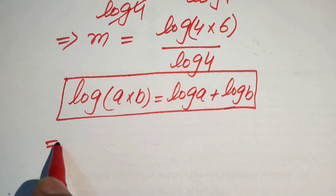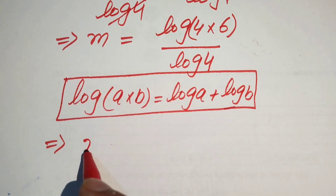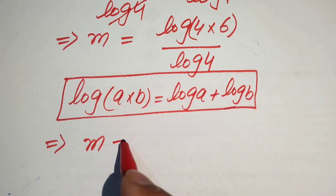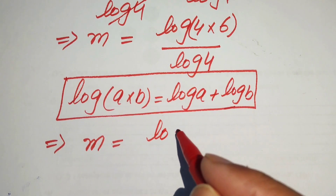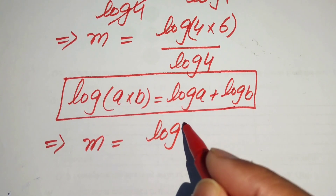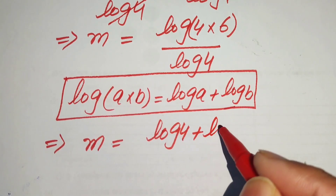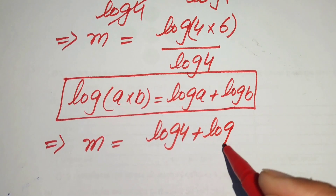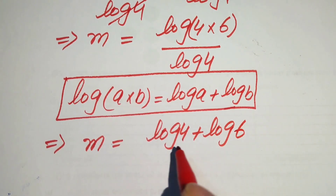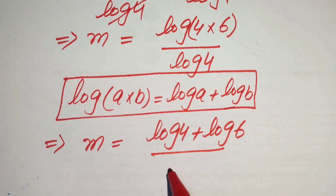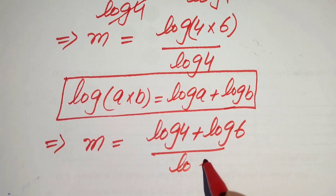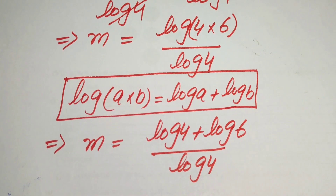After applying this property, m is equals to log of 4 plus log of 6, and this is divided by log of 4.